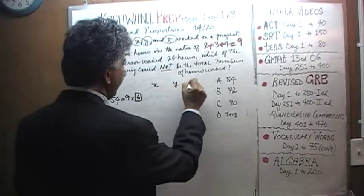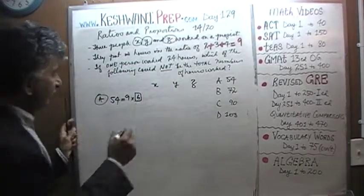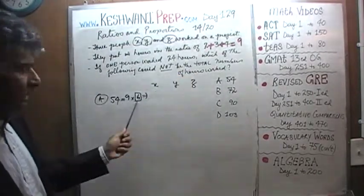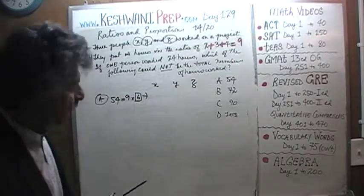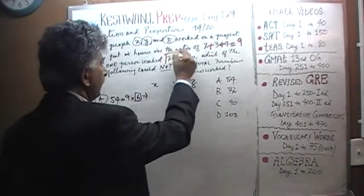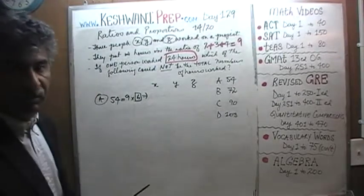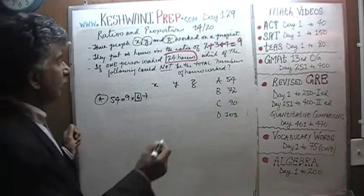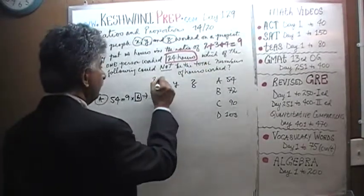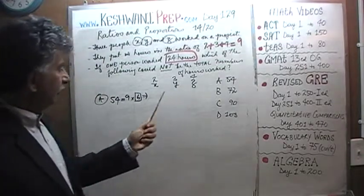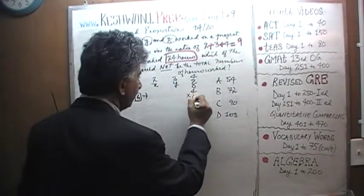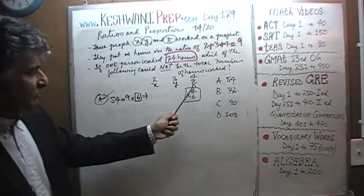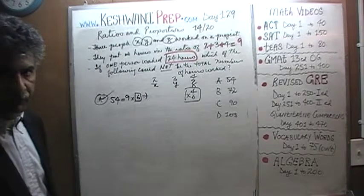For example, 54 is simply 9 times 6. 9 times 6 implies that each part is worth 6 hours. We are told that one person has worked 24 hours. Can we look at that one person who would have worked 24 hours in this scenario? Well, it's very simple. They work in the ratio of 2 to 3 to 4. Well, there you go. 4, 6, and 24. In this scenario, in scenario A, it is Mr. Z who worked 24 hours. That is possible.